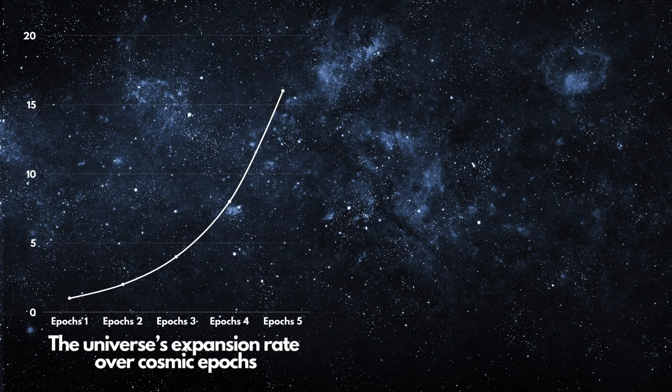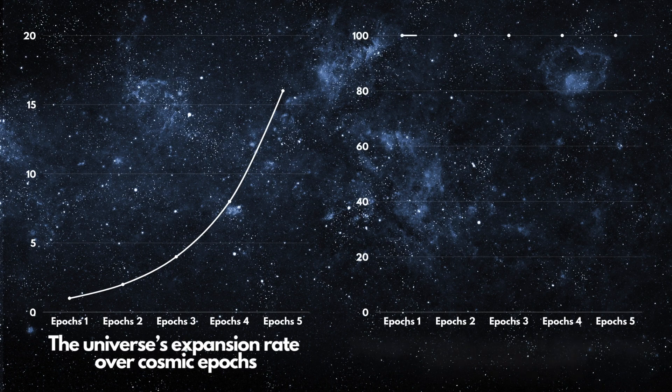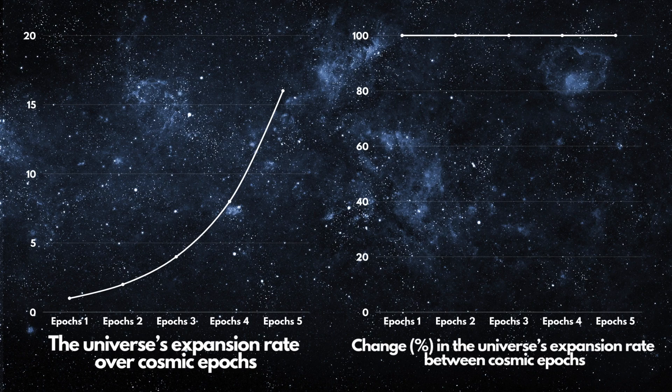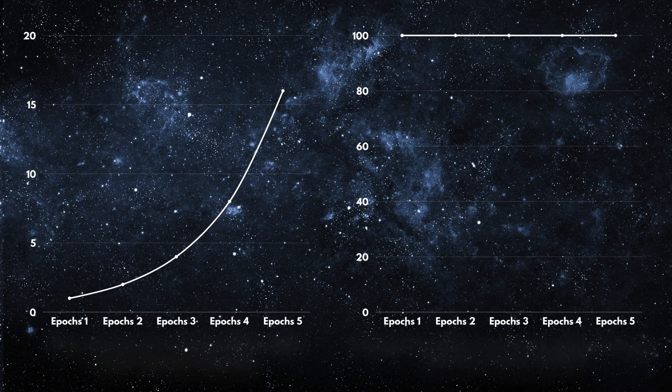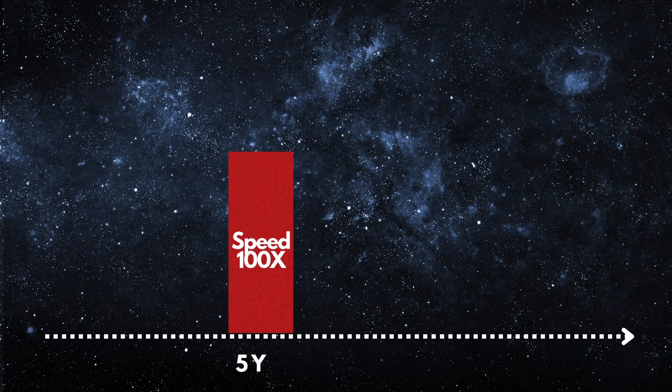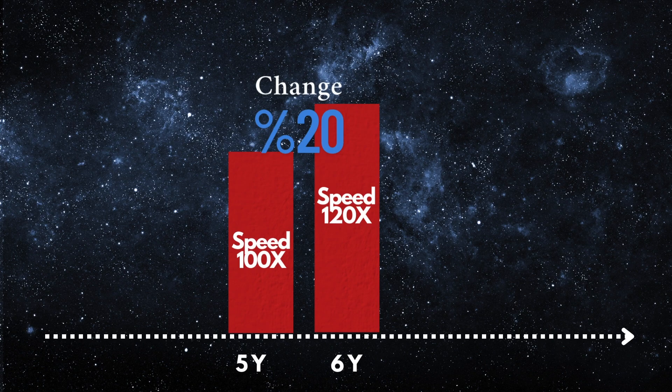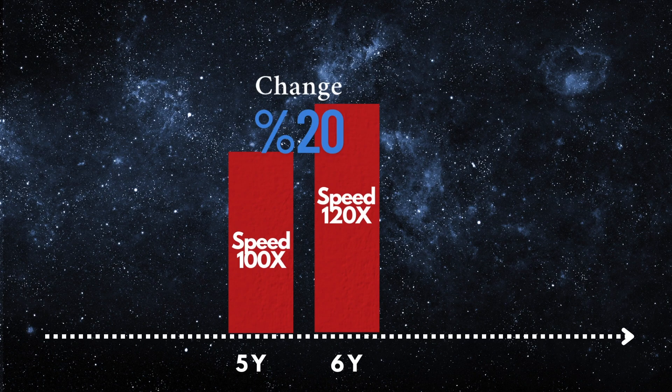To put it simply, if dark energy is truly constant, then the expansion rate of the universe should increase at the same percentage across every epoch of cosmic time. What does that mean? Let's try to break it down with a rough analogy. Imagine that as the universe aged from 5 billion to 6 billion years, the expansion rate increased from 100x to 120x. That's a 20% increase.